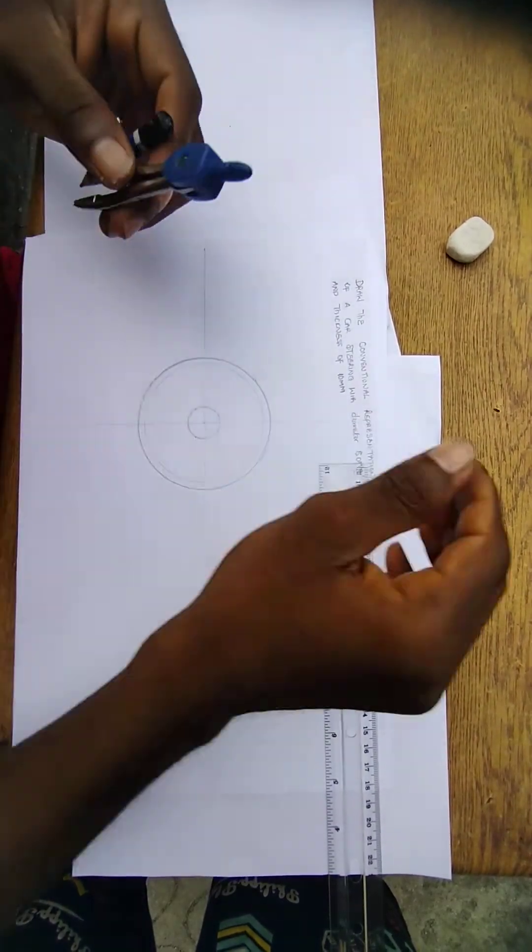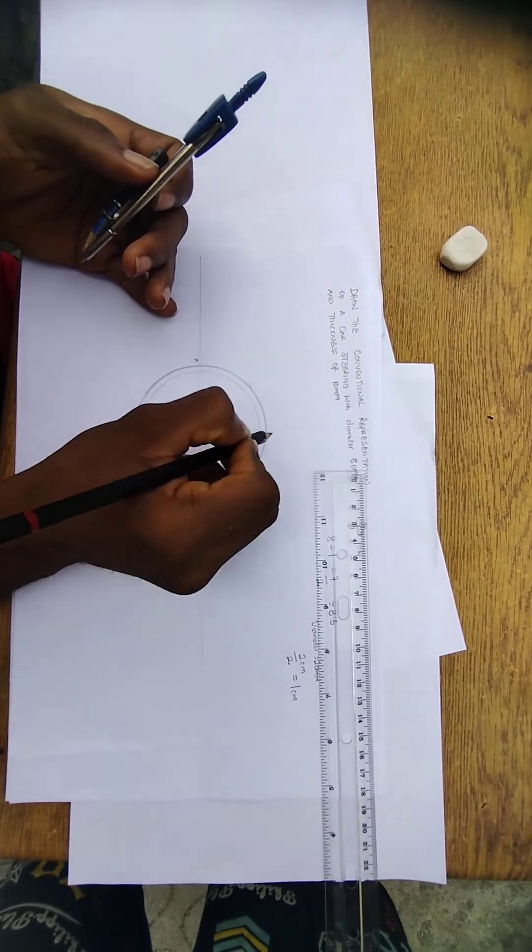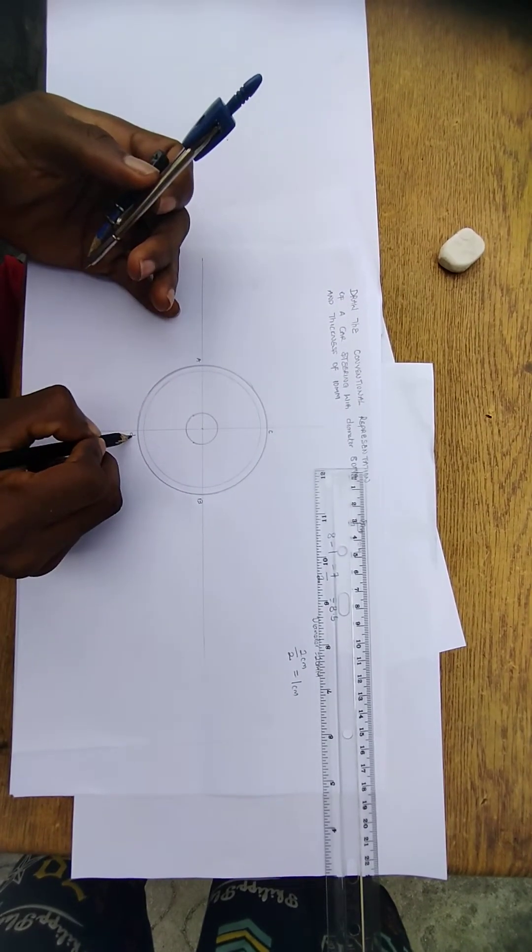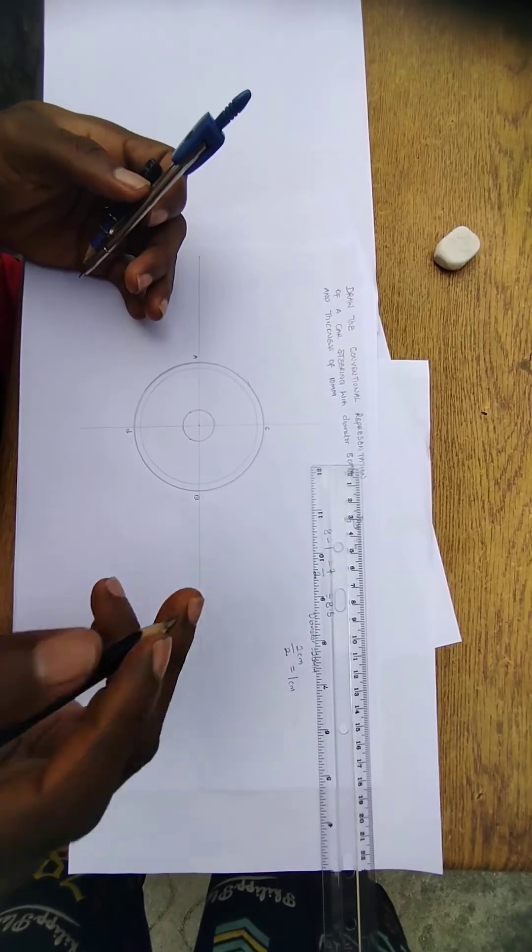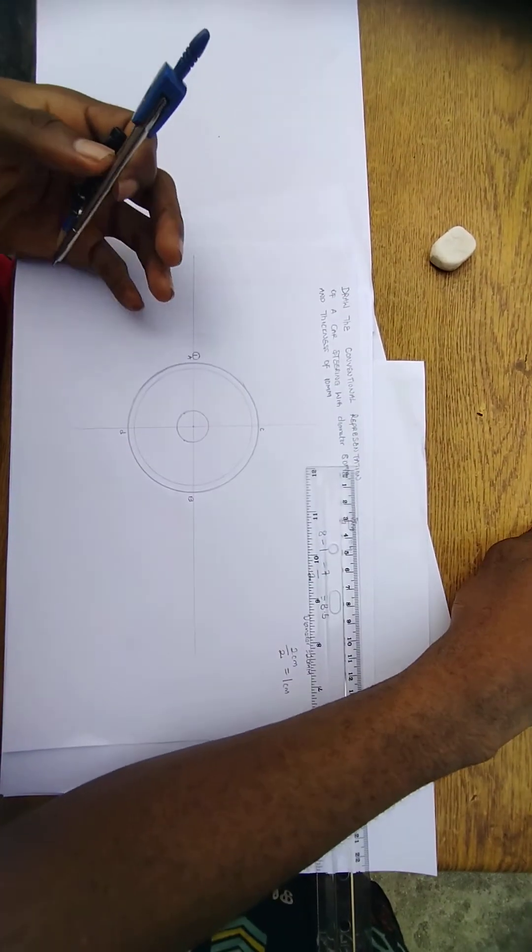Now, since you have gotten this small circle, in Indian drawing, you will know that here is our A, here is our B, here is our C, and here is our D. Now you are going to get 3 points. Where are the 3 points? A is my point 1. A is my point 1.